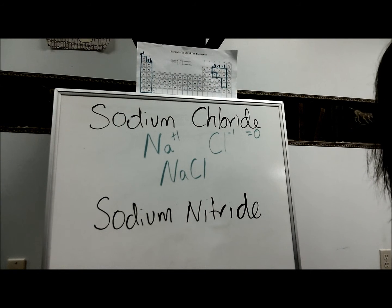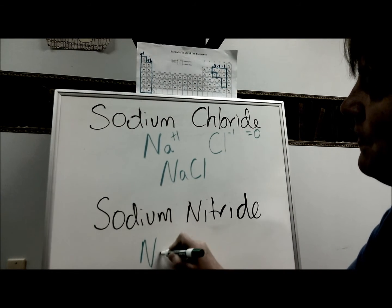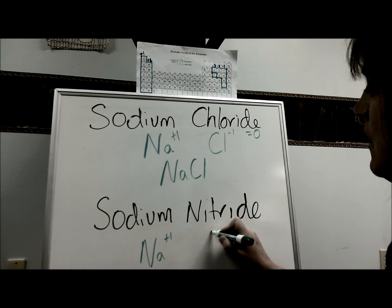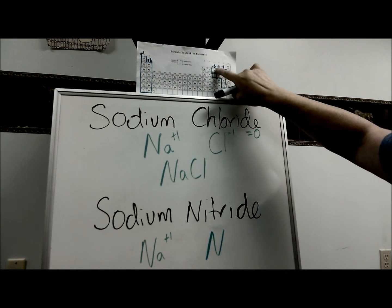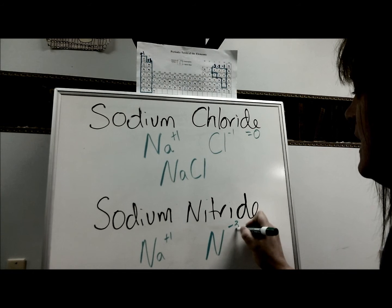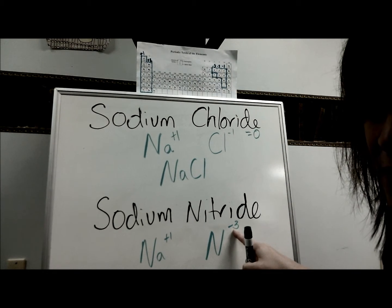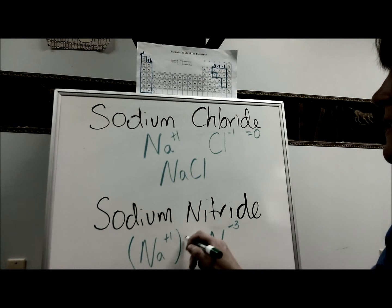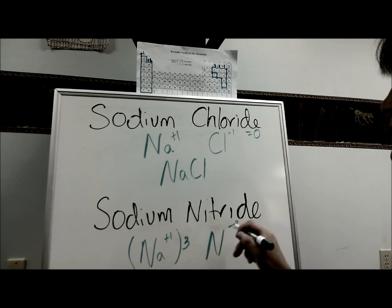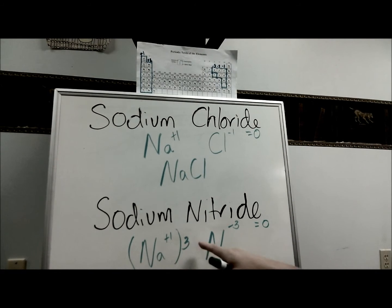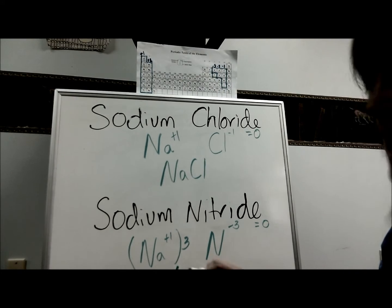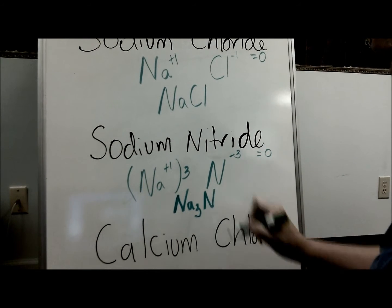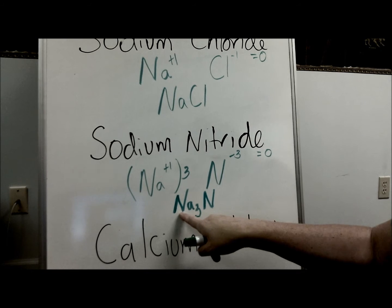Let's take a look at sodium nitride. Sodium, again, is Na and it's plus 1. Nitride is nitrogen — nitrogen's symbol is N, and it's in group 5, which has a minus 3. 1 minus 3 is not 0, so I need to figure out how to make them equal 0. I need 3 sodiums, because 3 times plus 1 would be plus 3; plus 3, minus 3, equals 0. So when I write this formula, I write Na₃N — I need 3 sodiums and 1 nitrogen, written as a subscript.